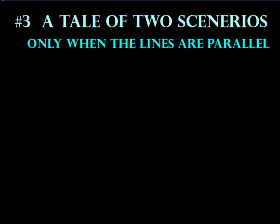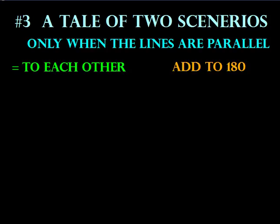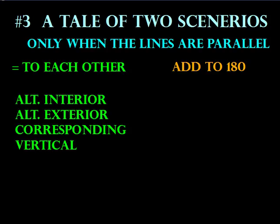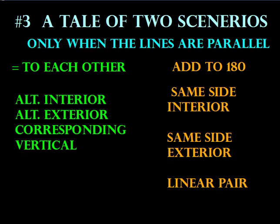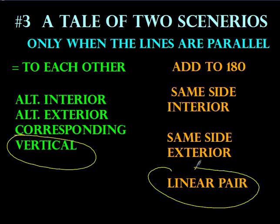But what about when those lines are parallel? Make sure you know these relationships. When setting up problems, two things happen: we either set them equal to each other, or we add them together and set them equal to 180. We set things equal to each other when they are alternate interiors, alternate exteriors, corresponding, or vertical. We add and set equal to 180 if they are same side interiors, same side exteriors, or linear pairs. And as a reminder, vertical angles and linear pairs work even when the lines are not parallel.